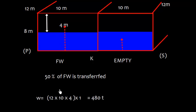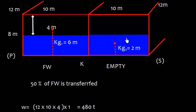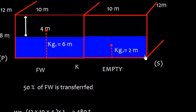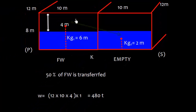Now let's find out KG1. KG1 is going to be 6 meter and KG2 will be 2 meter, which is half of 4 meter. KG2 is 2 meter and KG1 is 6 meter, which is 4 meter plus 2 meter. These are the centers of gravity of the weight transferred from this place to this place.